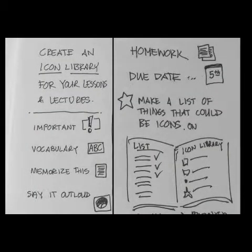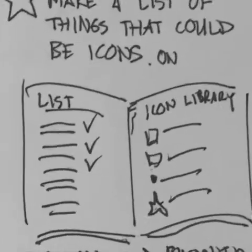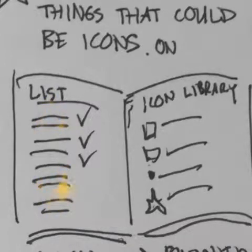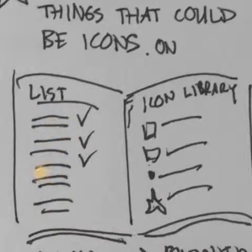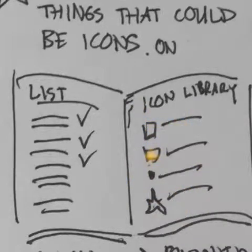I wanted to really get into the idea of a visual library. What you're going to do is create, in this little booklet here you can see, a list of things that you really want to emphasize or communicate with a visual cue. Now these are just words, so you might just say something like 'homework,' or 'this is important,' or 'the due date,' something like that. And then on this side it's blank at first, but then you start creating some icons corresponding to these ideas.